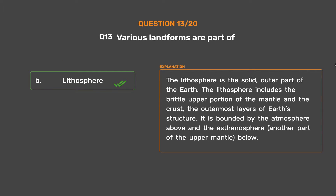The lithosphere is the solid outer part of the Earth. It includes the brittle upper portion of the mantle and the crust — the outermost layers of Earth's structure. It is bounded by the atmosphere above and the asthenosphere, another part of the upper mantle, below.